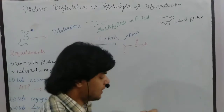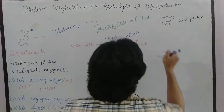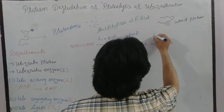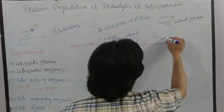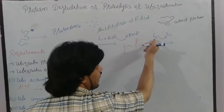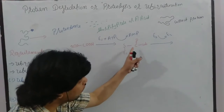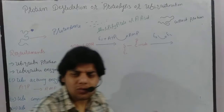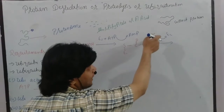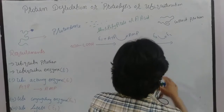After E1 activates ubiquitin, the second enzyme E2 reacts with this activated ubiquitin. E2 releases E1 from its position and replaces it. The ubiquitin then attaches to E2 via cysteine residues — since E2 is also a protein, it has cysteine residues available for bonding.